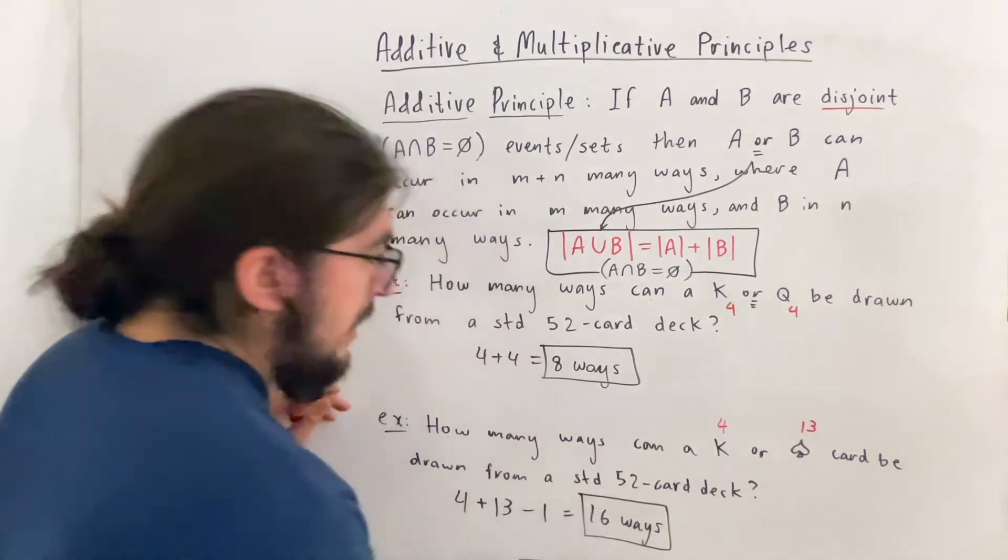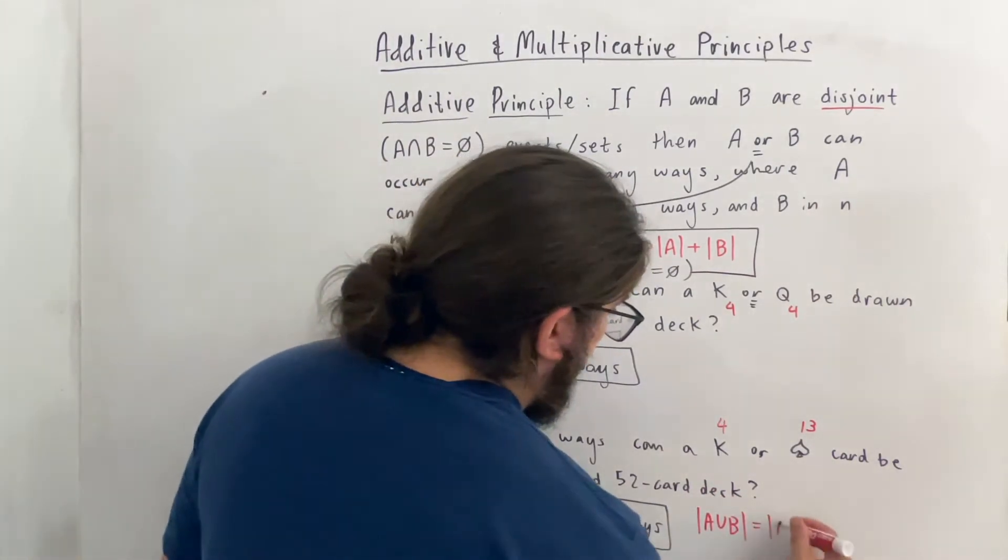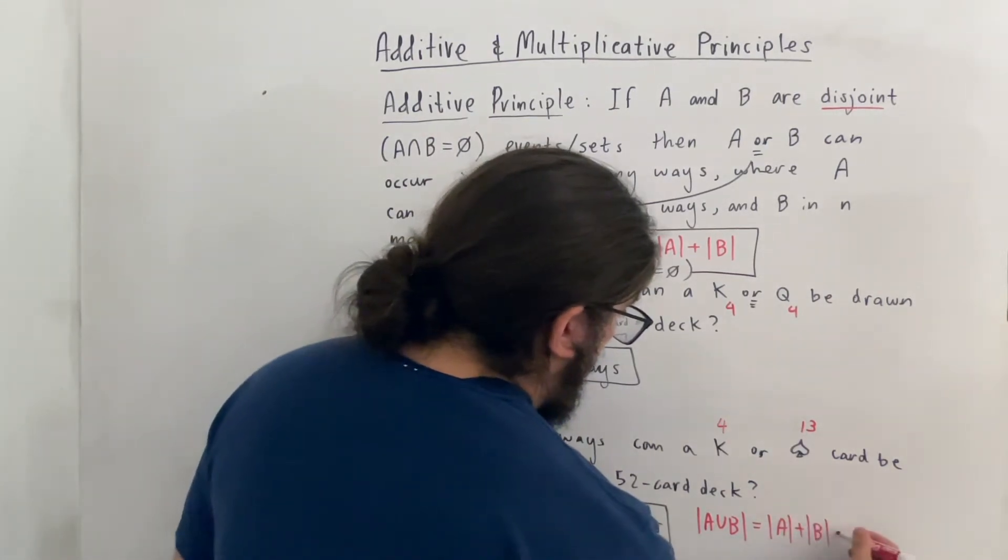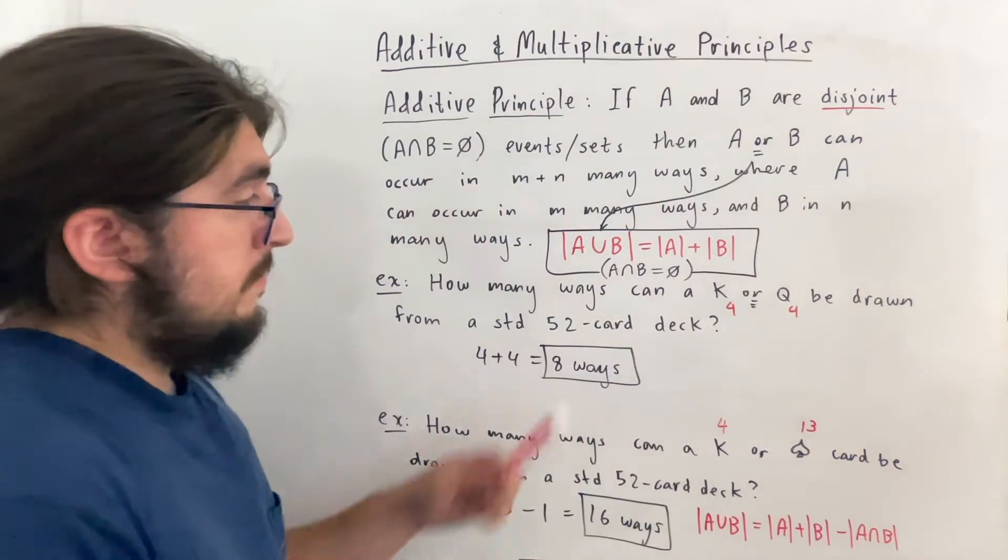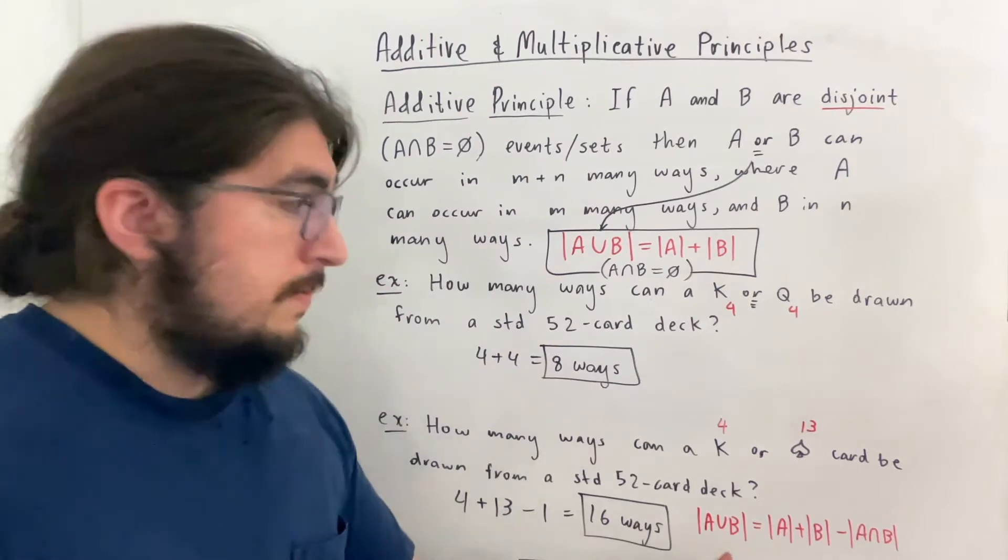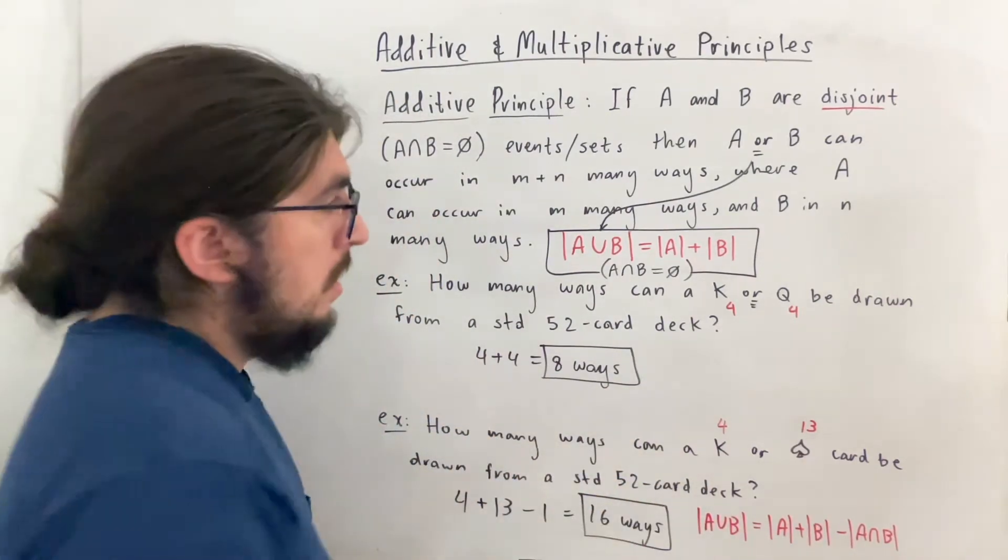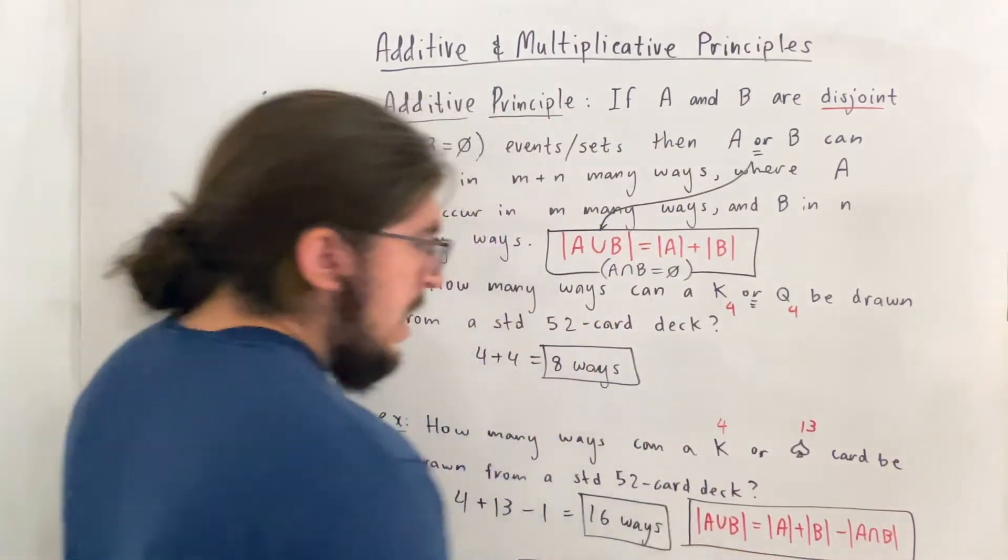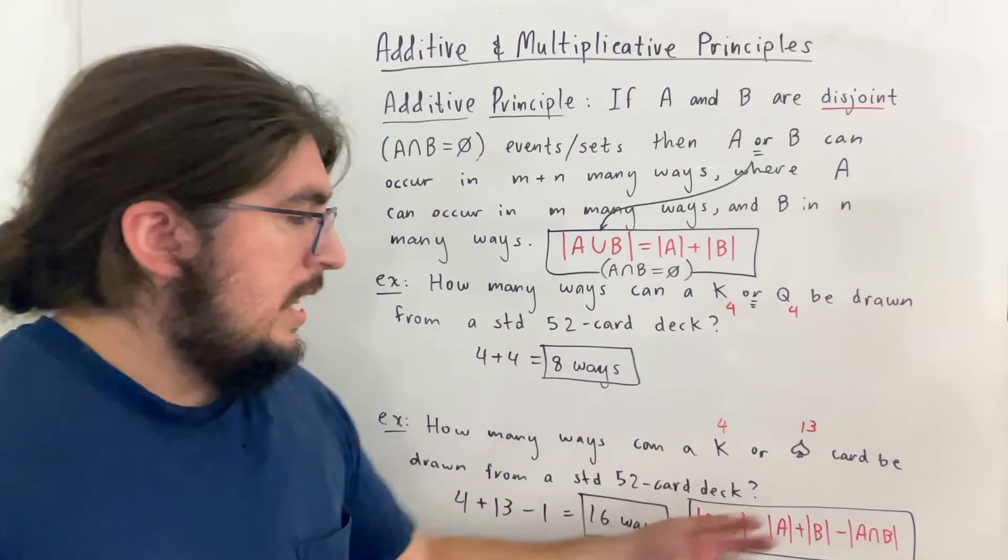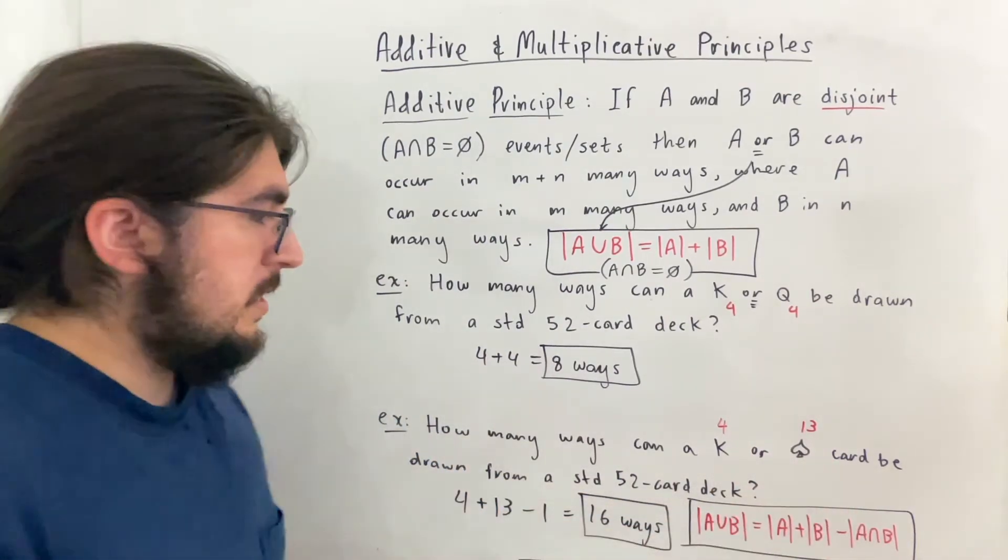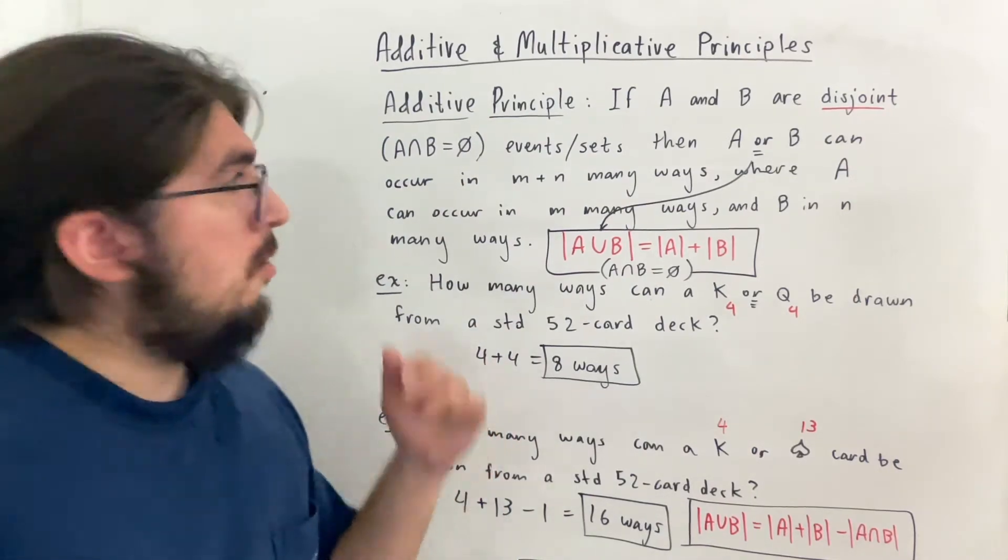Now the generalization here is that the cardinality of the union of two sets is the sum of the cardinalities of those sets minus the size of the intersection of those sets. So here this is assuming that the intersection is not the empty set. But notice, even if the intersection was the empty set, this would still hold because the empty set has a size of zero. So that would basically just make this minus zero and turn it to that. So in fact, this is a more general statement. And if you think about it, the set of all kings, the size of that is four. The set of all spades, the size of that is 13. And the intersection of those is just the king of spades. The size of that is one. So then if you just add, you get literally this: four plus 13 minus one. So with that being said, that basically sums up the whole idea of the additive principle.